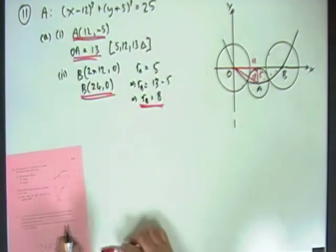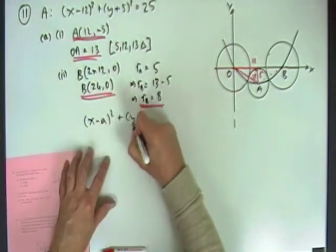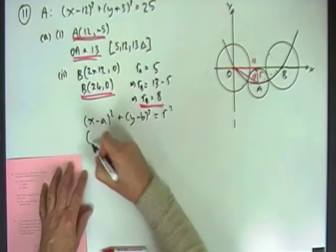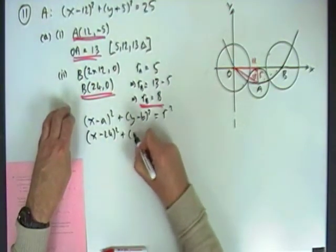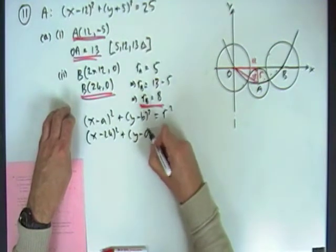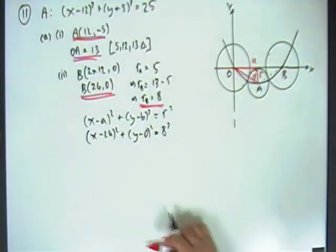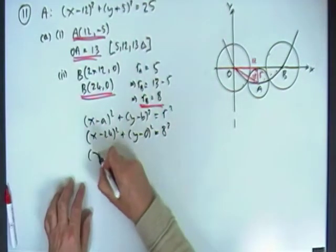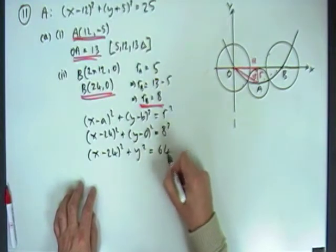Put them together to get to this equation. So you've got X minus A squared, Y minus B squared equals R squared, so that's going to be X minus 24 squared plus Y squared equals 8 squared, so that means I've got (X - 24)² + Y² = 64.